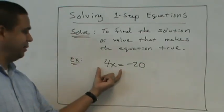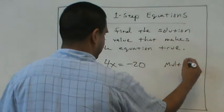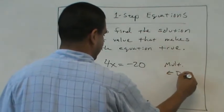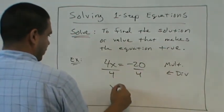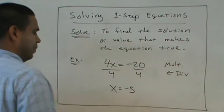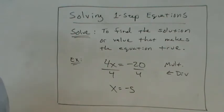The inverse of multiplication is division. So because this is a multiplication problem, we would divide. So 4x = -20, divide by 4, x = -5. Just like that. Questions on that?